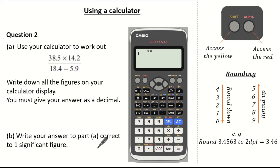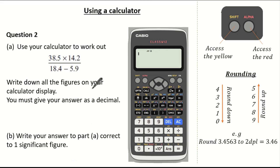Now let's have a look at another question. Here the question wants us to use our calculator to work out 38.5 times 14.2 over 18.4 subtract 5.9. Again we are asked to write down all the figures on our calculator display and we must give our answer as a decimal. Part B wants us to write our answer to part A correct to one significant figure. See if you can give it a go and press pause if you need.